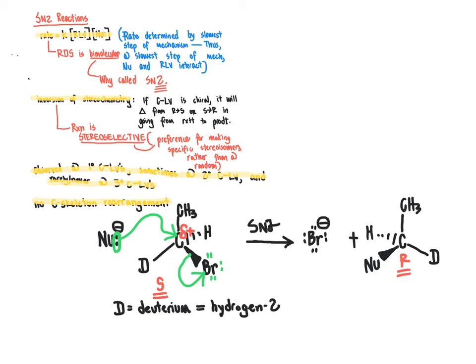Let's go through these features step by step. The rate was dependent upon the concentration of the electrophile and the nucleophile. We can explain that because of the fact that this is a one-step mechanism. If we have a one-step mechanism, the overall rate of the reaction is determined by how much of the nucleophile we have and how much of the electrophile we have. So the mechanism we've come up with matches the rate equation.